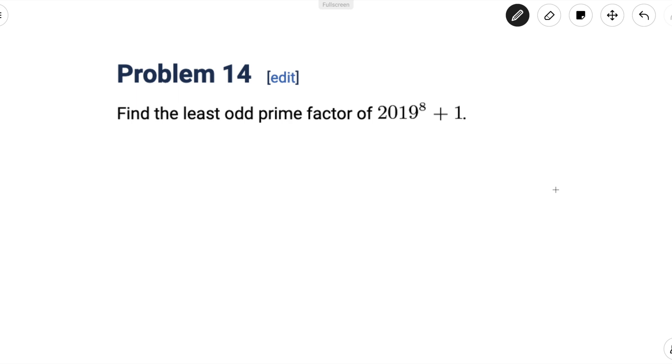That's a short problem. This is 2019 AMC 10 problem number 14. It reads, find the least odd prime factor of 2019 to the 8 plus 1.